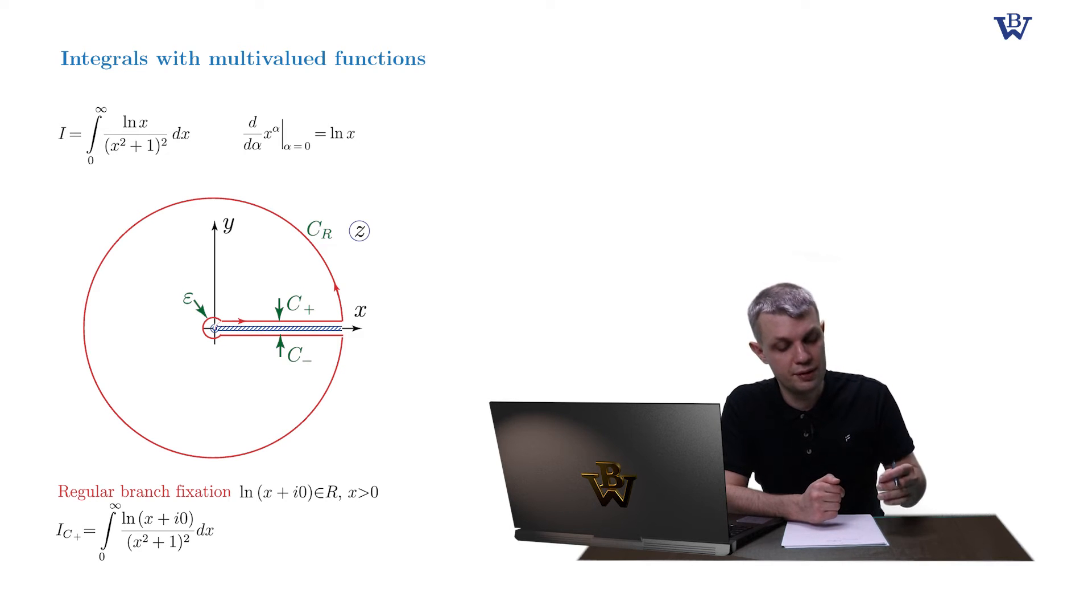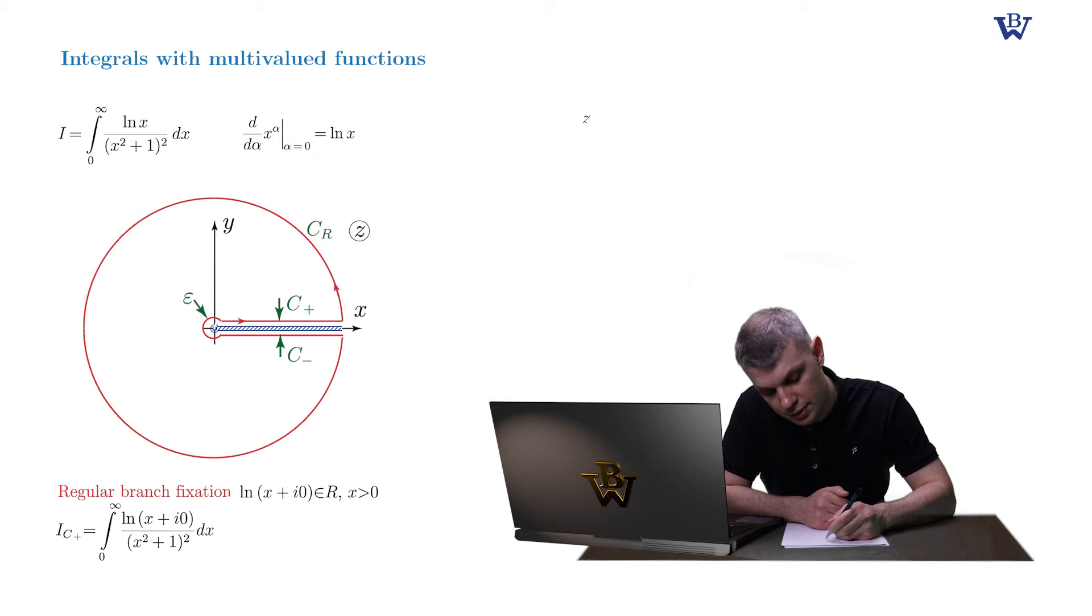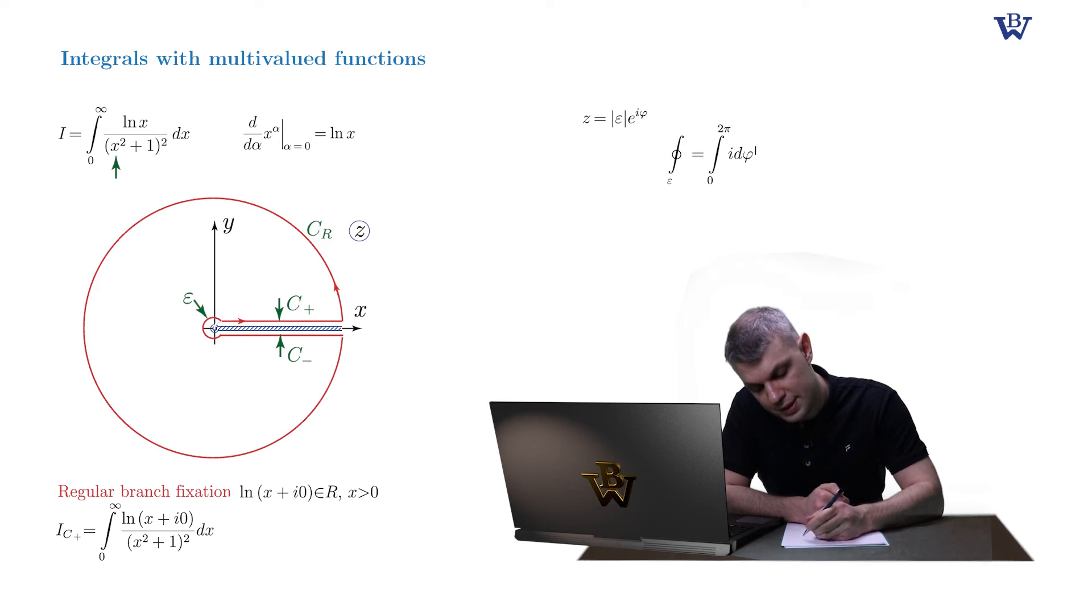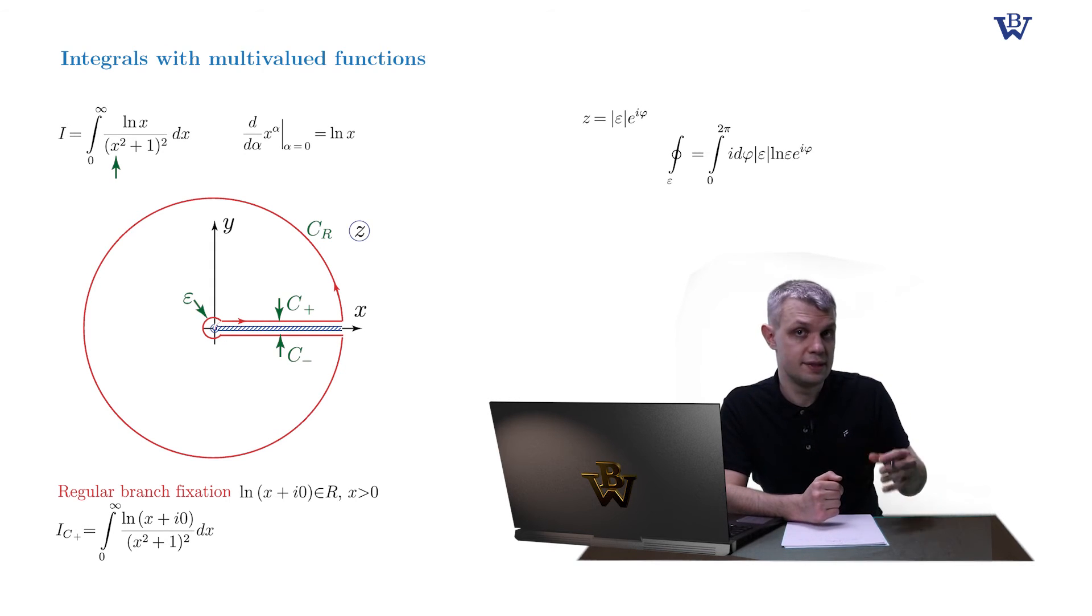First, the infinitesimal integral around the origin, c epsilon. So let's make a parameterization. z equals the modulus of epsilon times e to i phi. And then plug this into our integrand. So obviously we can discard z squared in the denominator as a small parameter. So we end up with the integral over d phi times the modulus of epsilon times the log of epsilon. And again, this integral behaves as epsilon times log epsilon. And this expression vanishes as epsilon tends to zero.